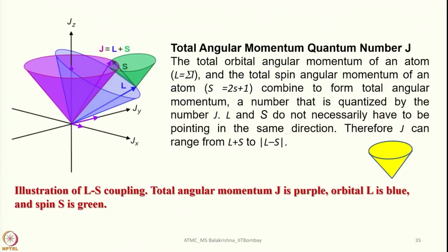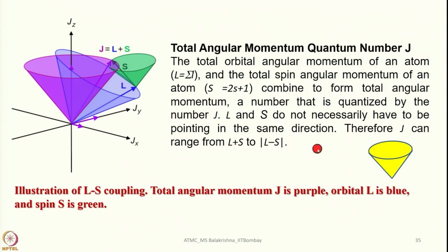Now let us revisit the total angular momentum quantum number J. If a given electronic configuration is more than half-filled, we consider J = L + S; if less than half-filled, J = L − S. The total orbital angular momentum L and total spin angular momentum S combine to form total angular momentum J, which is quantized. L and S do not necessarily point in the same direction, so J ranges from L+S to |L−S|. This diagram shows J in purple, orbital L in blue, and spin S in green, illustrating how they interact.